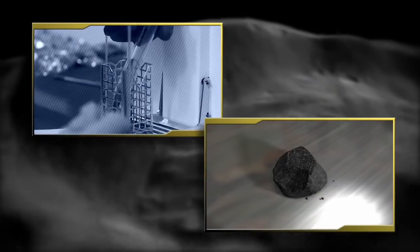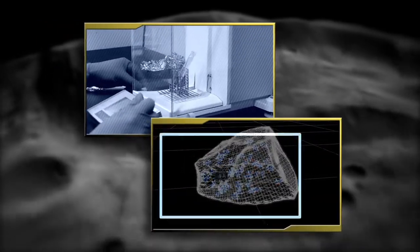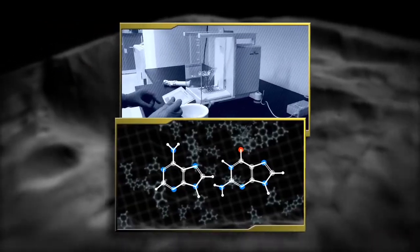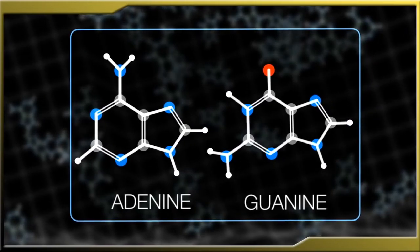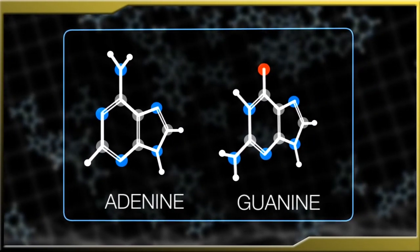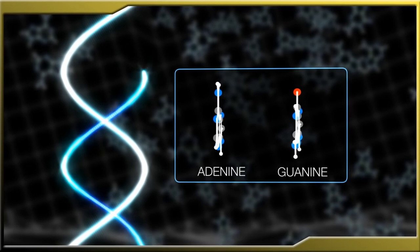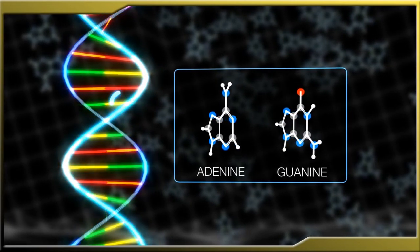Since Bennu may be rich in organic material or water left over from the formation of the solar system, sampling it could reveal whether the building blocks of life were present at that time, perhaps providing clues to the origins of life itself.